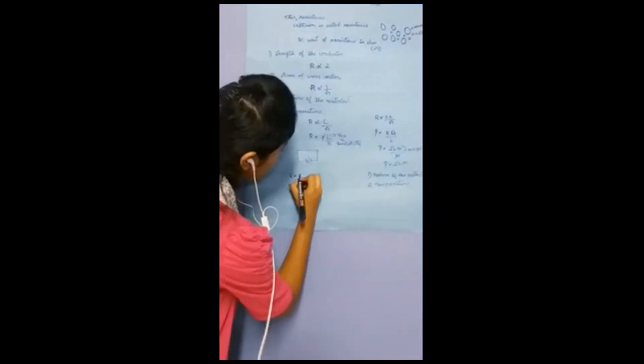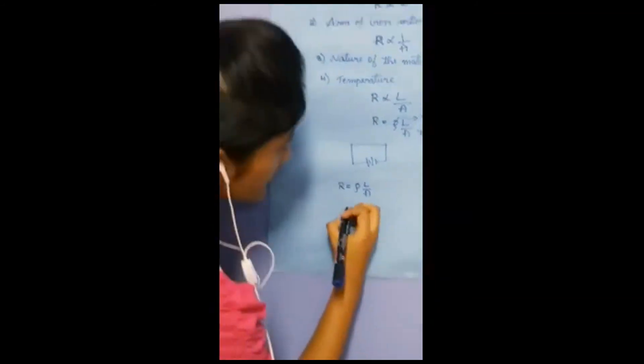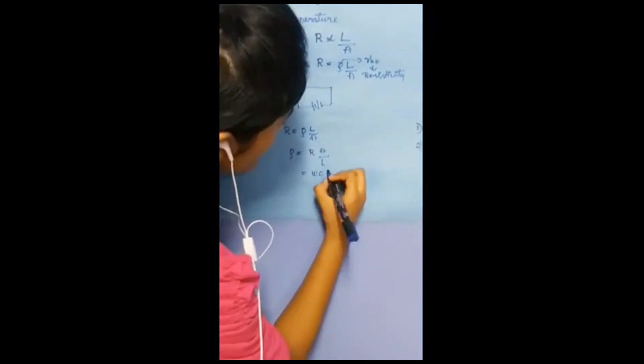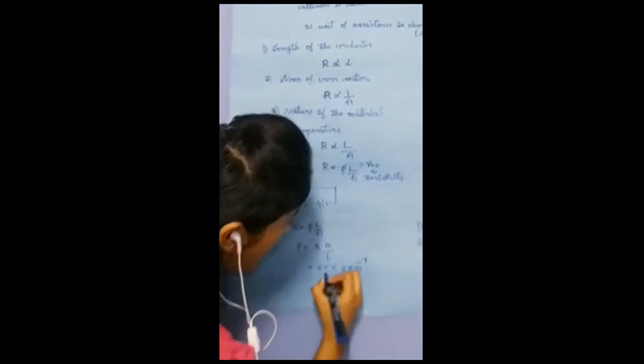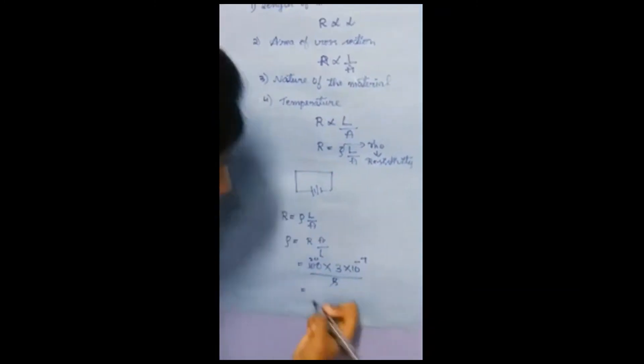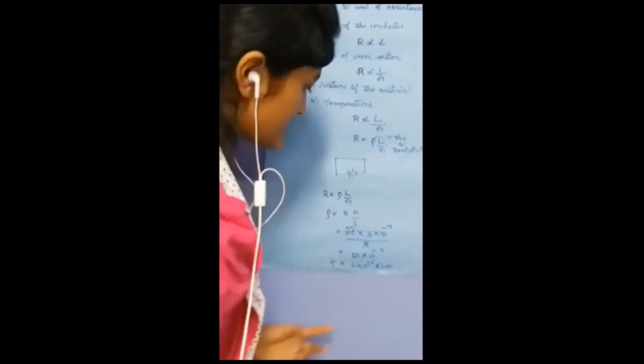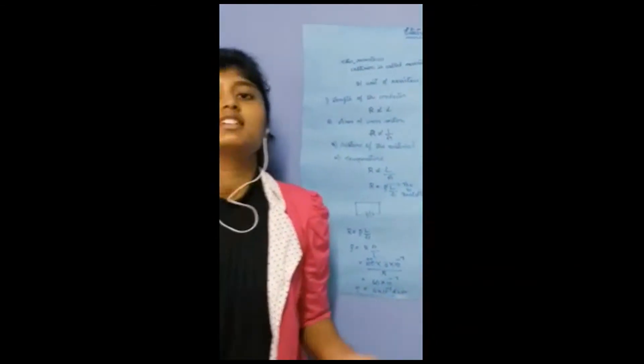Let us read out the first question. Resistance of a metal wire of length 5 meters is 100 ohm. If the area of cross section of the wire is 3 × 10⁻⁷ meter square, calculate the resistivity of the metal. All values are given directly, so we use the formula R = ρL/A. Rearranging, ρ = RA/L = 100 × (3 × 10⁻⁷) / 5 = 60 × 10⁻⁷ / 5 = 6 × 10⁻⁶ ohm·meter. So the resistivity of the metal is 6 × 10⁻⁶ Ω·m.